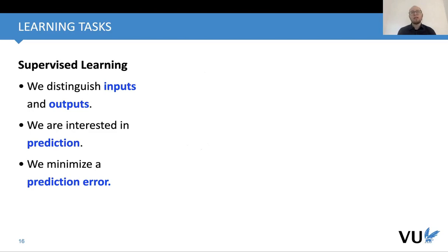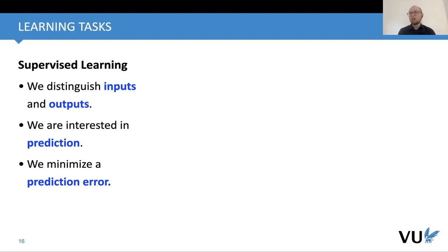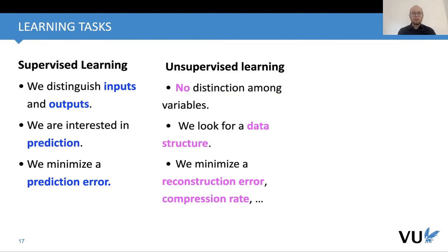We can discuss what kinds of learning tasks we have in general and distinguish three main tasks. The first is supervised learning: we have inputs and outputs — for instance, images and labels like horses and cats. We are mainly interested in prediction: given a new image, we want to say what the proper label is. What we do is minimize some kind of prediction error.